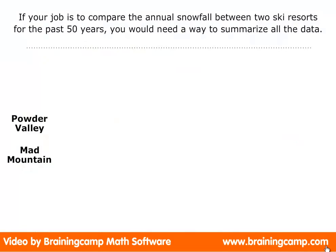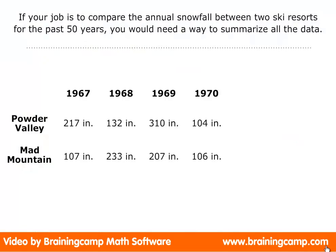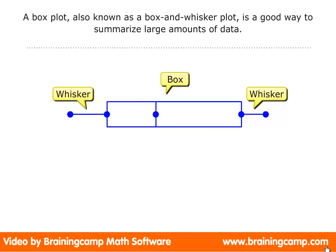If your job is to compare the annual snowfall between two ski resorts for the past 50 years, you would need a way to summarize all the data. A box plot, also known as a box and whisker plot, is a good way to summarize large amounts of data.